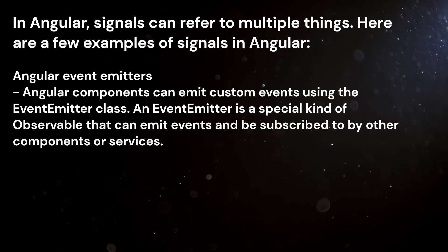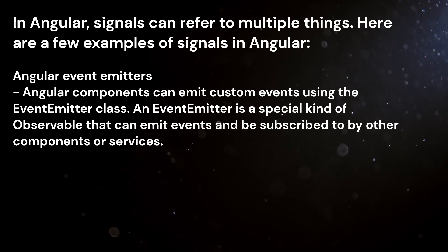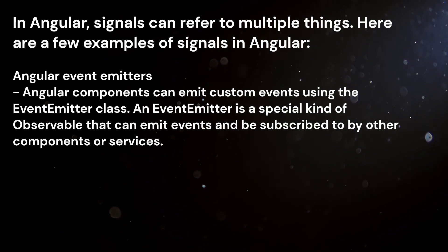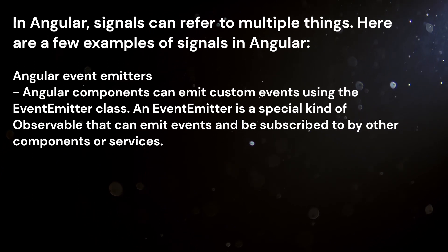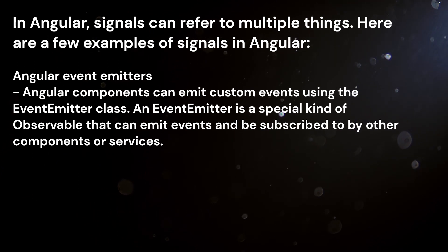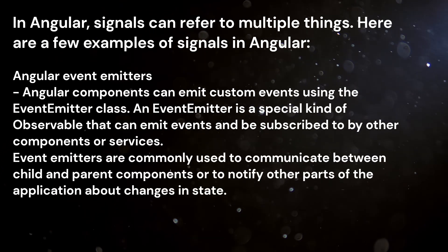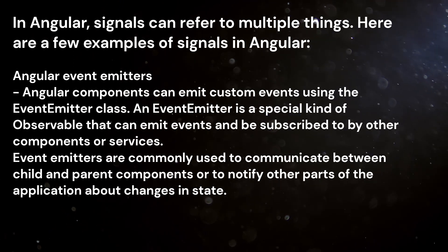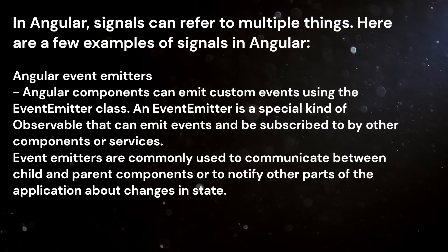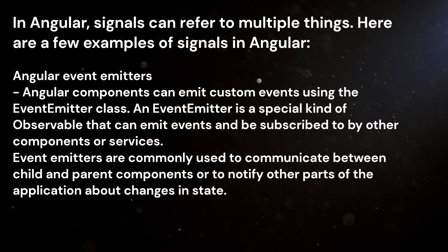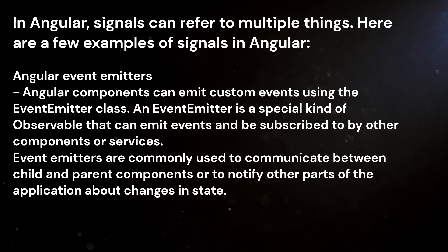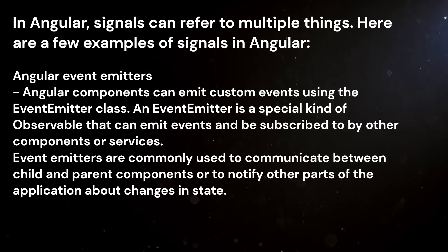Angular event emitters — Angular components can emit custom events using the EventEmitter class. An event emitter is a special kind of observable that can emit events and be subscribed to by other components or services. Event emitters are commonly used to communicate between child and parent components or to notify other parts of the application about changes in state.